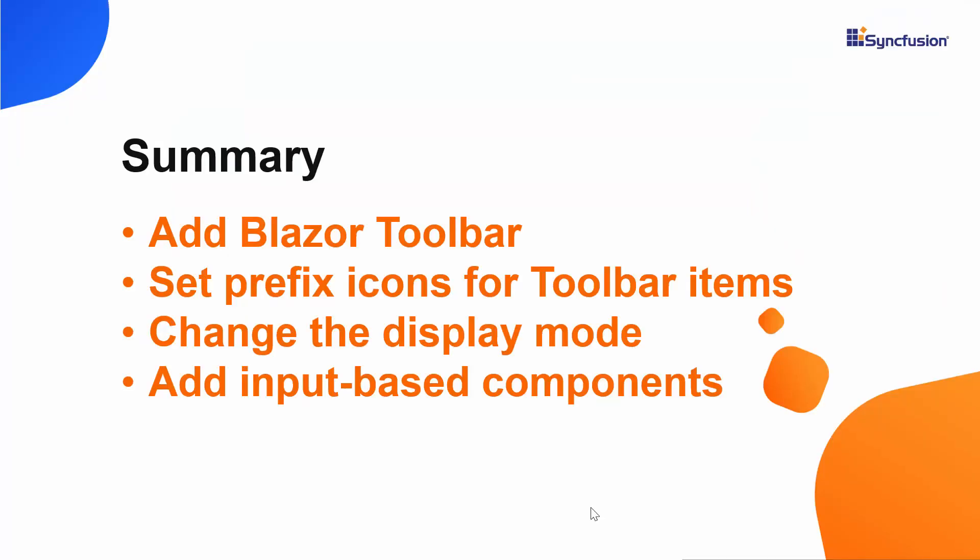Let me make a quick recap of what we have seen so far. We have seen how to create a Blazor Server app using Visual Studio 2019 and add a Syncfusion Blazor Toolbar component to it. We have also seen how to set prefix icons, separator, and display mode. Finally, we saw how to add input-based components like Numeric TextBox and Dropdown List to the toolbar. If you would like to see the working example, you can download it from the GitHub link shared in the description. You can also grab a free license key to use our complete Blazor products if you fit into our community license guidelines, so check the link in the description to see if you are eligible.